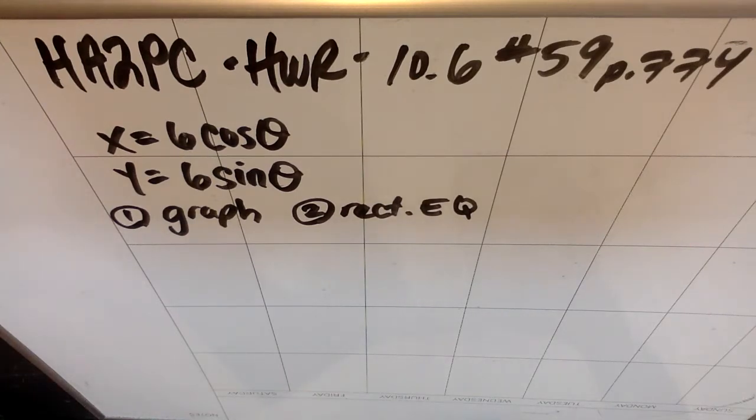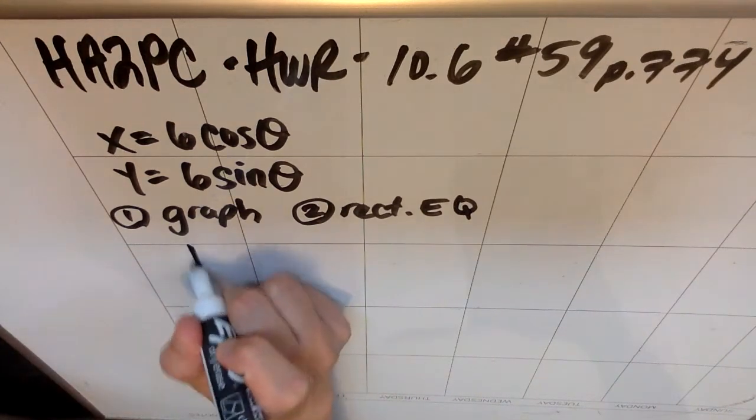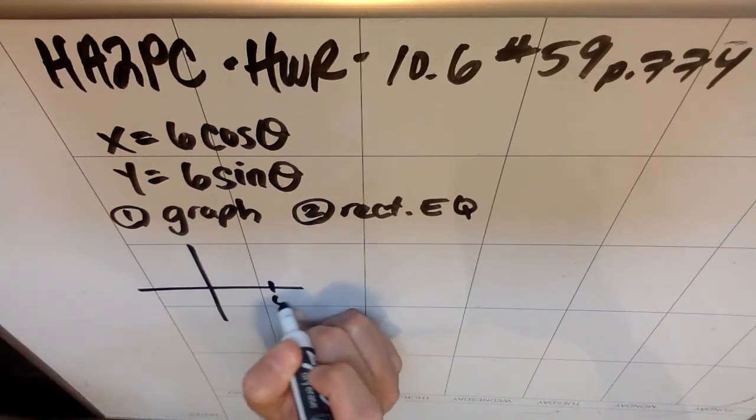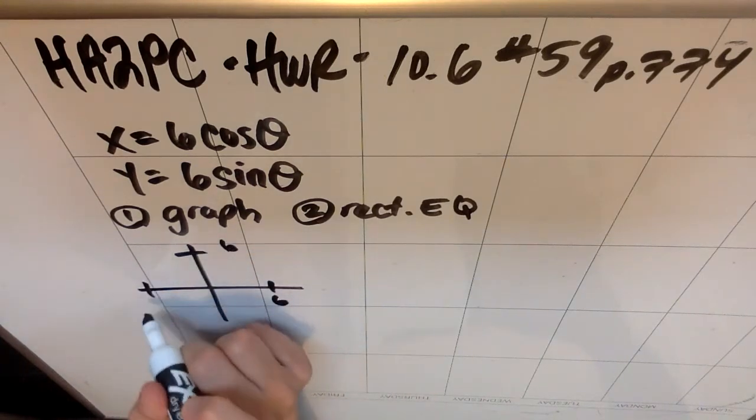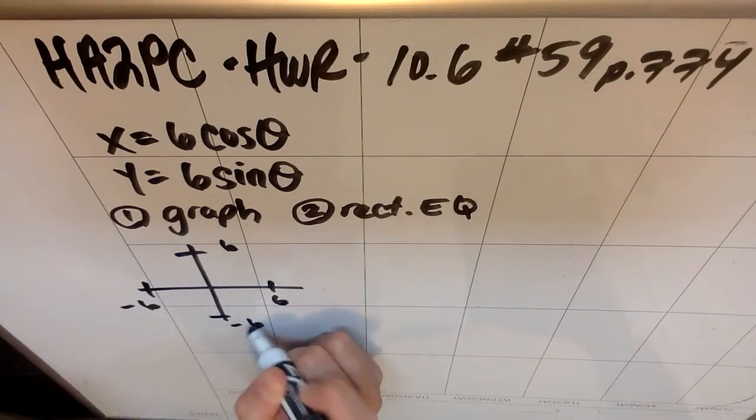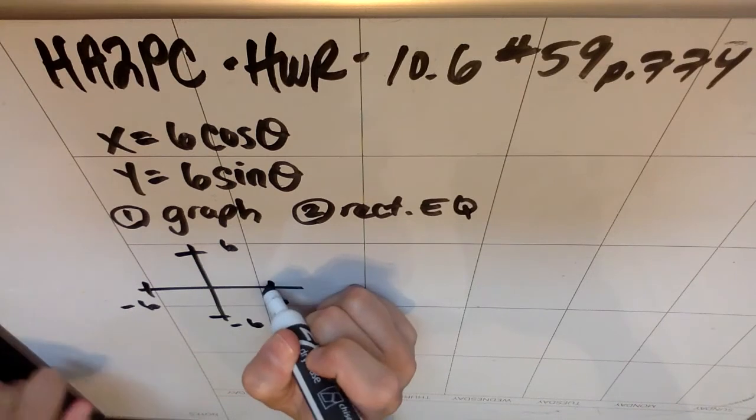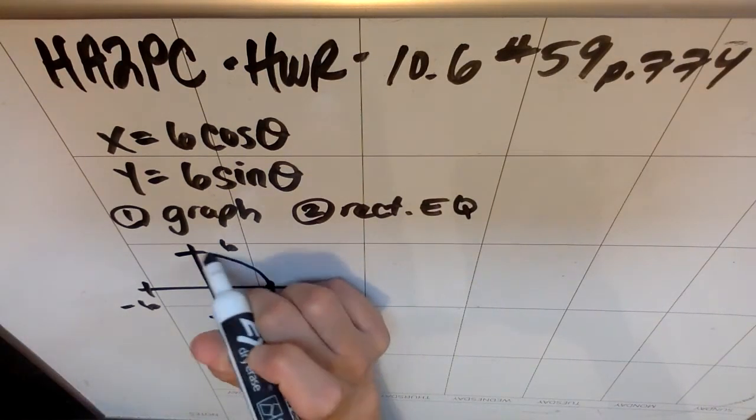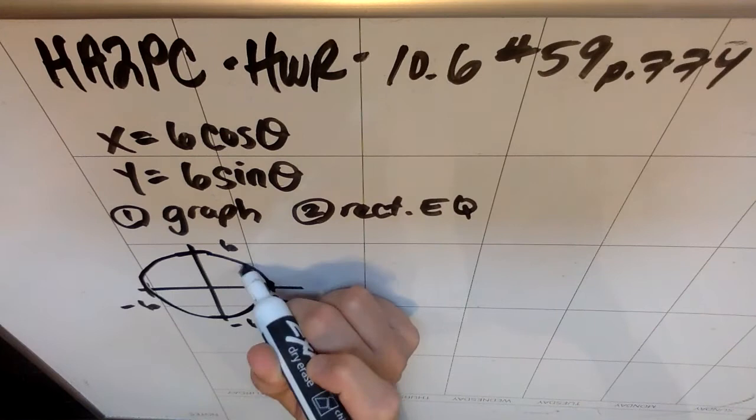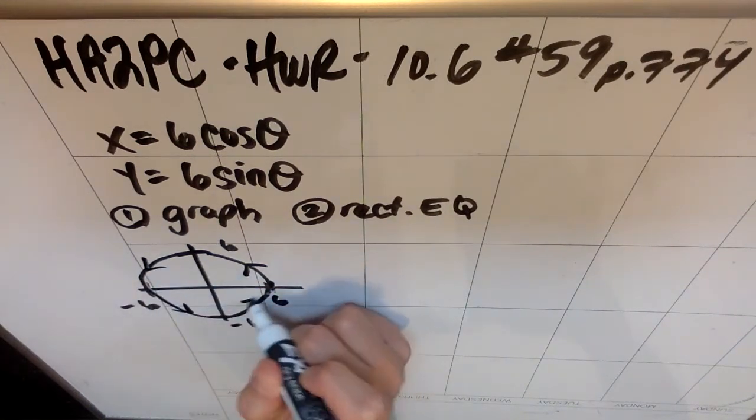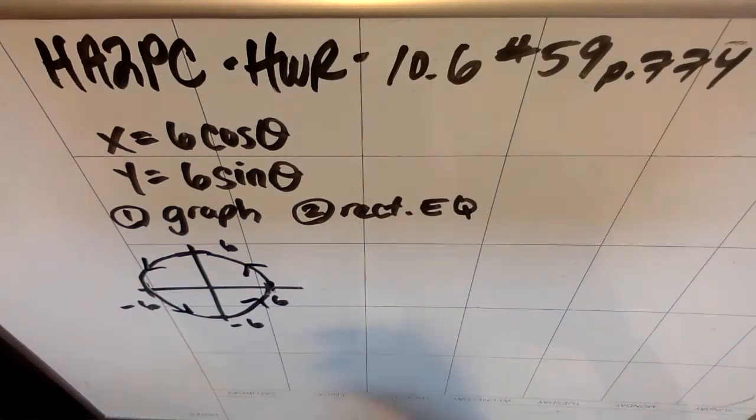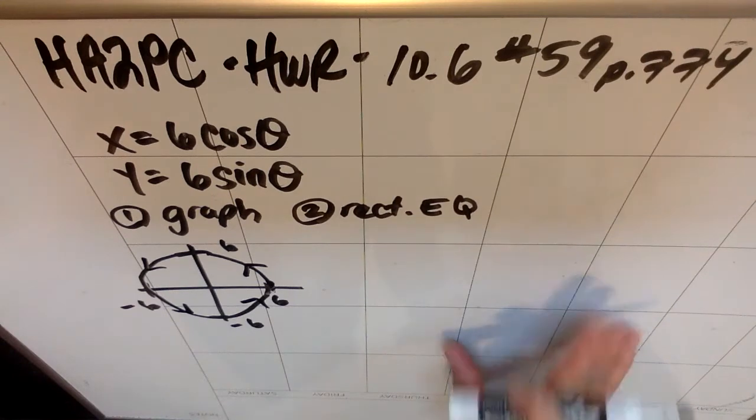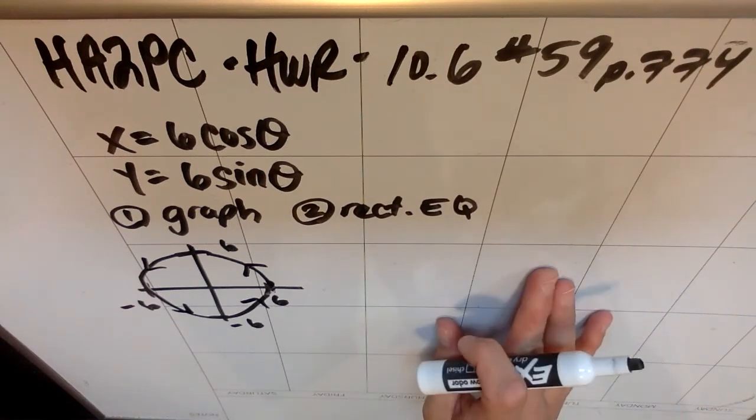You also could have made a table, right? So I'm going to suggest that I would not have made a table. What I would have done is just said, hey, wait a second, this is the unit circle with a radius of six. And because I'm the laziest human on the planet, I'm literally going to make my scale go by sixes, and I know it's going to start here and go like this, and it's going to go this way because it's the unit circle but with a radius of six. Great, that's a circle. It doesn't look very circular, but you get the idea.